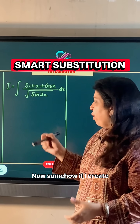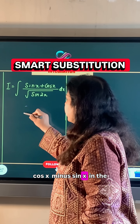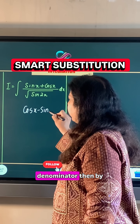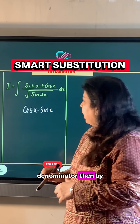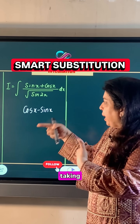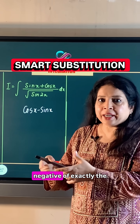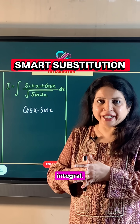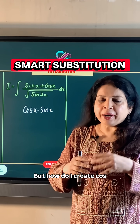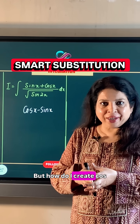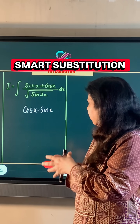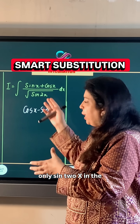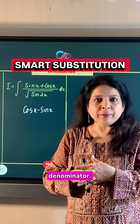Now somehow if I create cos x minus sin x in the denominator, then by taking the derivative of this I get negative of exactly the numerator of the integral. But how do I create cos x minus sin x in the denominator when I have only sin 2x in the denominator?